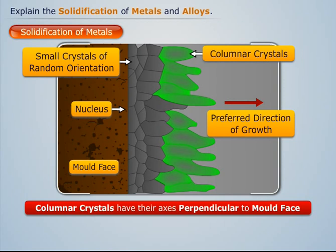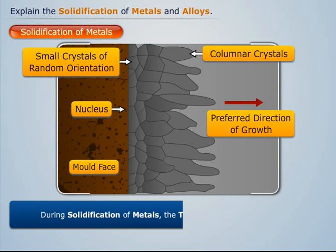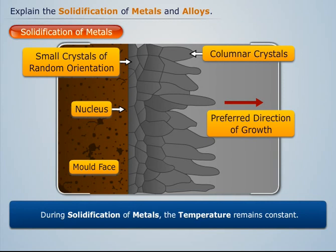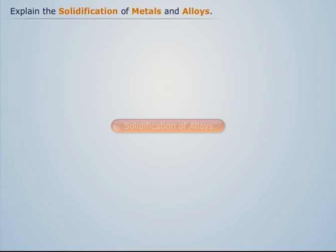Thus the shape of the molten metal crystals formed will be as shown. Note that during solidification of metals, the temperature remains constant. This can be represented graphically as shown.